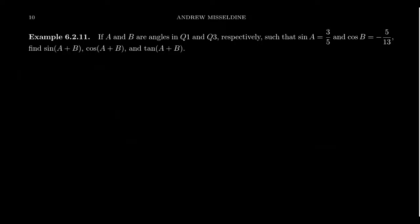Let me give you another example. Suppose we have two angles A and B which terminate in the first and third quadrant respectively. Suppose we know that sine of A is equal to 3 fifths and cosine of B is equal to negative 5 thirteenths. Let's use this information to find sine of A plus B, cosine of A plus B, and tangent of A plus B.